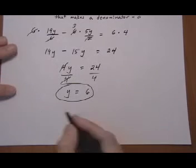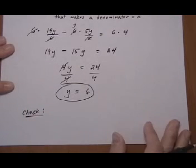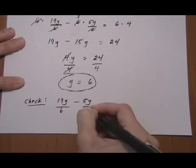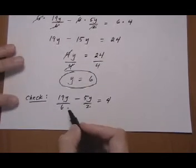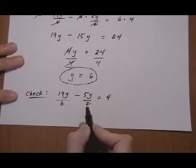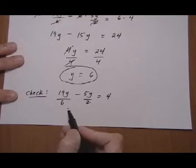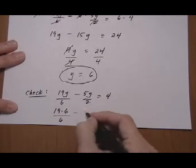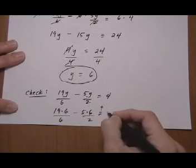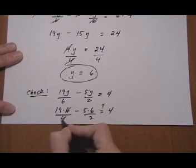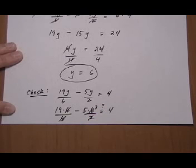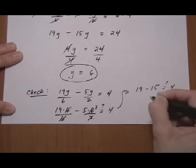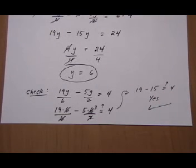And then for a check, we want to put this y equals 6 back into the original equation, which was 19y over 6 minus 5y over 2 equals 4. And we don't have to worry about a denominator going to 0 here because the denominators don't have any variables in them. So we're not going to be plugging in our 6 into the denominators. So we'll just put it in wherever we see a y. So 19 times 6 over 6 minus 5 times 6 over 2. The question is, does that equal 4? And it should equal 4 if this is a true solution. So let's do some canceling. Gives us 19 minus 15 equals 4. Yes, so it checks out y equals 6 is the solution.